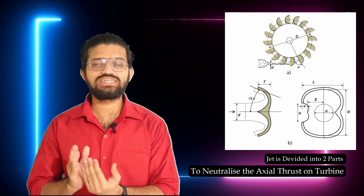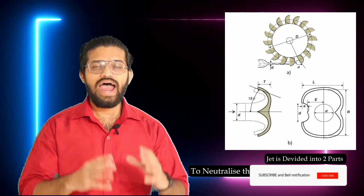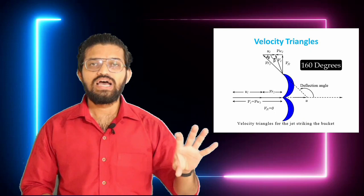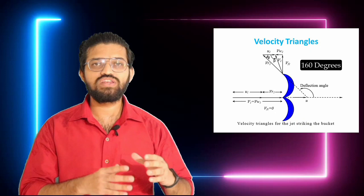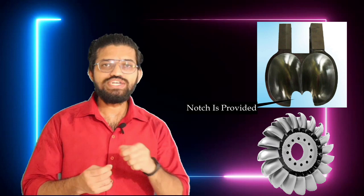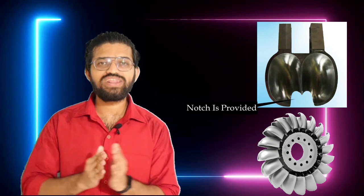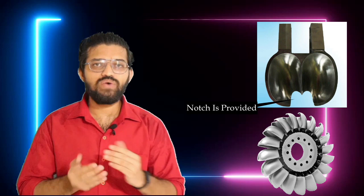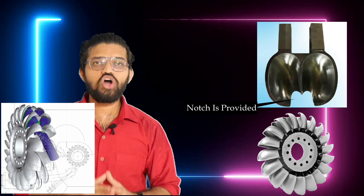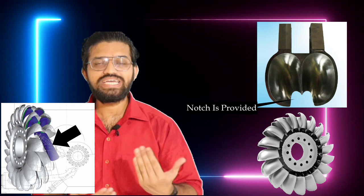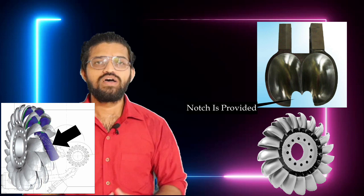The splitter divides the jet into two sections, and the jet is deflected at about 160 degrees, as you can see in this representation. Also, a slight notch is provided on each bucket. The main function of this notch is to ensure that when a bucket starts rotating, the next consecutive bucket is not affected by the incoming striking jet.